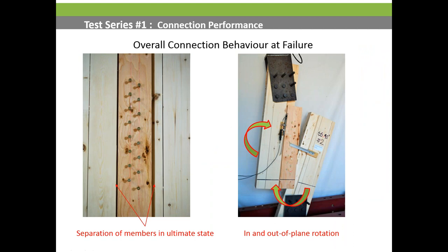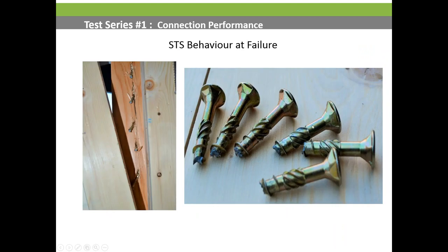Failure modes for surface spline connections under cyclic loading include: prying force pulling the specimen apart in ultimate stages, out-of-plane rotation, and fastener breakage in the ultimate stages. These fasteners — case-hardened with a high bending yield strength — experience low-cycle fatigue after 10, 15, or 20 load cycles and will ultimately fail. Significant wood crushing and bending of the fasteners are also observed before failure.